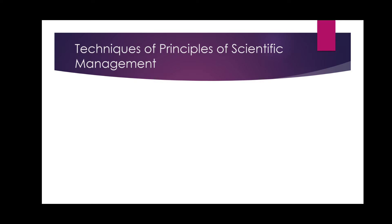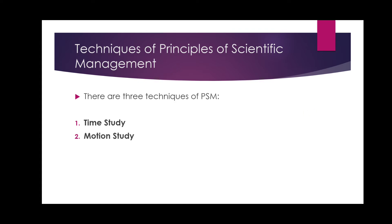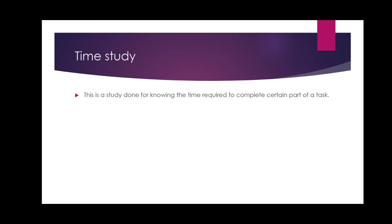That topic ends there. This is a new topic now: techniques of scientific management — what are the methods to apply these principles? There are three methods: time study, motion study, and differential wage rate study. The first and second we have just discussed, so let's quickly revisit. Time study is the study of knowing how much time is required to complete a task. The basic time that should be required — for example, if one hour is the standard, that one hour becomes the standard time.